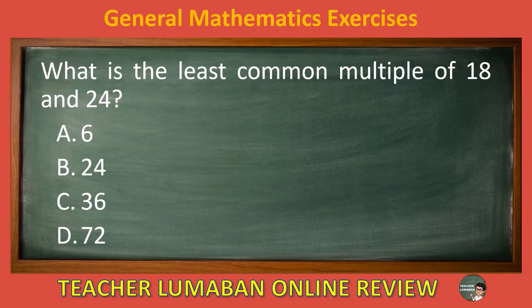The correct answer is letter D: 72. The least common multiple of 18 and 24 is 72.